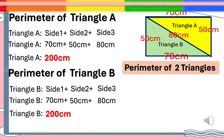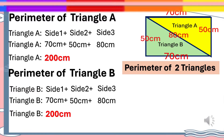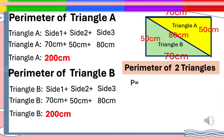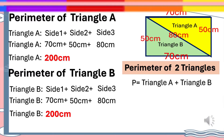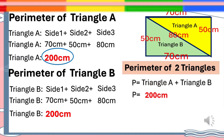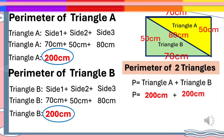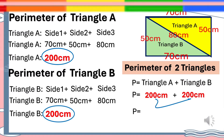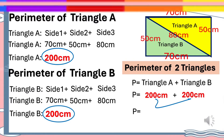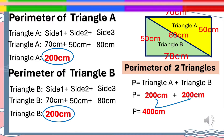To solve for the perimeter of the two triangles, just add the perimeter of Triangle A and Triangle B. P equals Triangle A plus Triangle B, which is 200 cm plus 200 cm. Therefore, the perimeter of the two triangles is 400 centimeters.